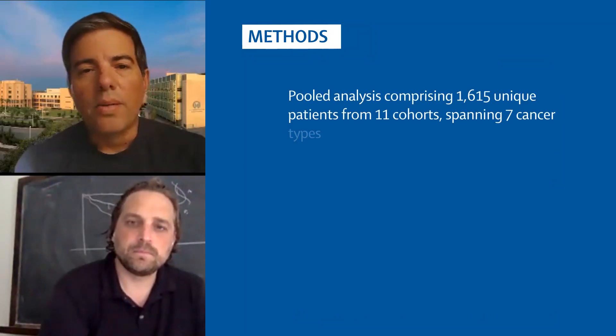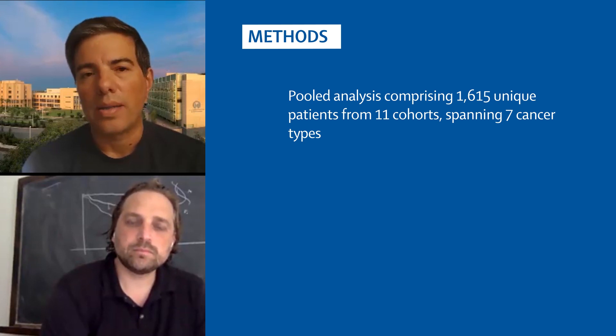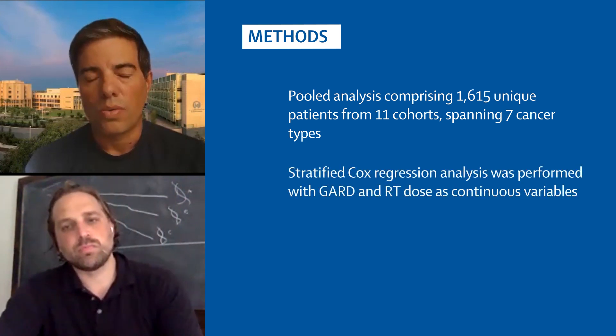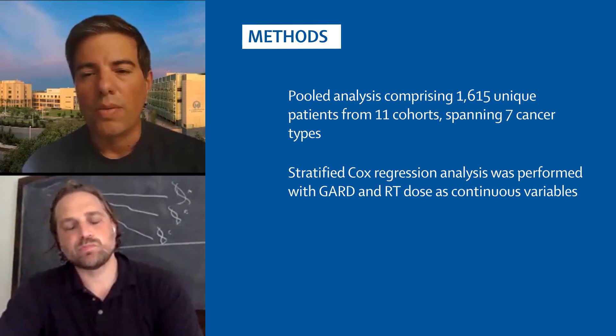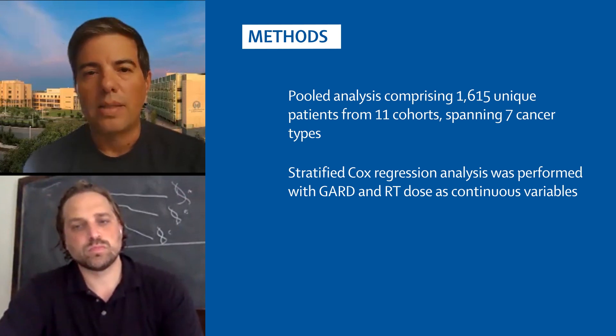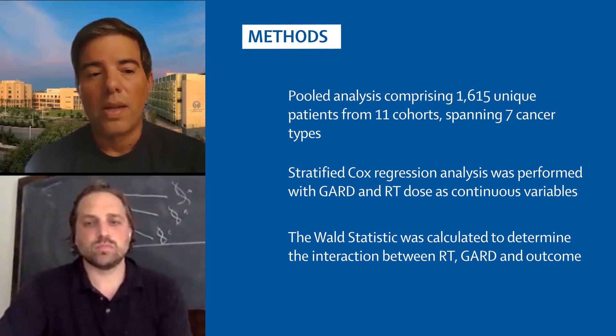So what we did is that we performed a pooled analysis of all publicly available cohorts in the literature that had enough information to calculate RSI and to calculate GARD, and that had clinical outcome associated with that cohort. And we had a total of 1,615 patients from a total of 11 cohorts, across seven different cancer types that we were able to identify. And in collaboration with Jeff Sidor and Michael Kattan, we performed a stratified Cox regression analysis where we integrated all this data and we analyzed whether GARD or RT dose studied as continuous variables could predict the outcome of the patients. We also did an interaction analysis to determine whether GARD was predictive of radiotherapy benefit in the cohorts.